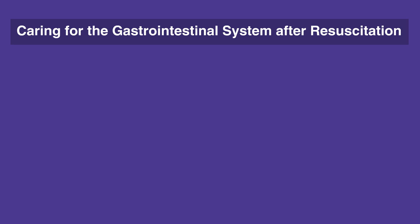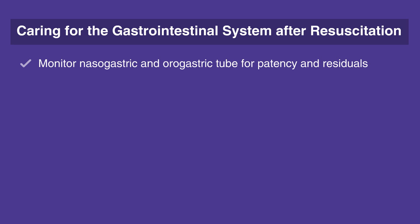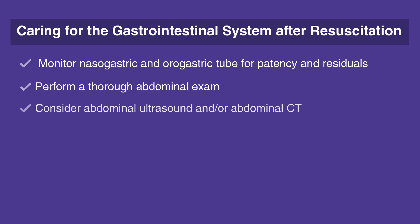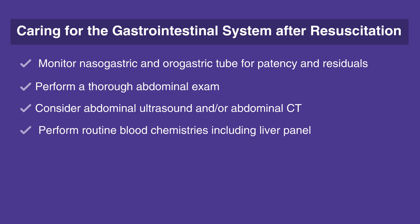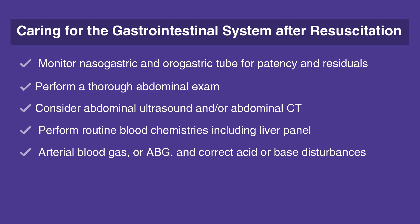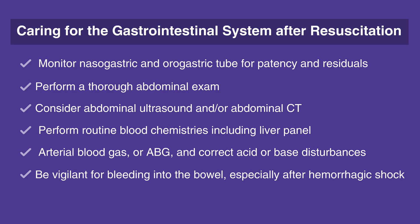When caring for the gastrointestinal system after resuscitation, follow this checklist: Monitor nasogastric, or NG, and orogastric, or OG, tube for patency and residuals. Perform a thorough abdominal exam. A tense abdomen may indicate bowel perforation or hemorrhage. Consider abdominal ultrasound and/or abdominal CT. Perform routine blood chemistries including liver panel. Arterial blood gas, or ABG, and correct acid-base disturbances. Be vigilant for bleeding into the bowel, especially after hemorrhagic shock.